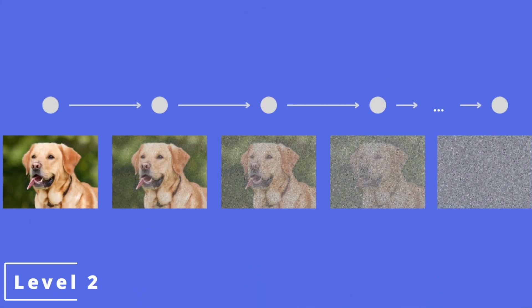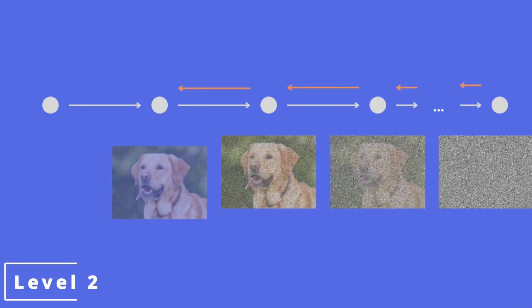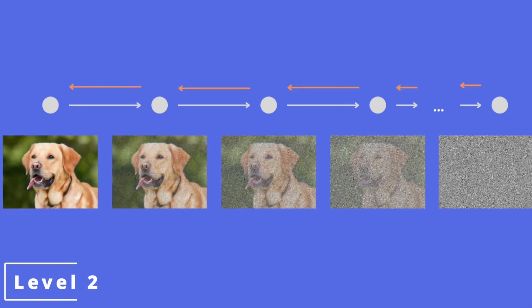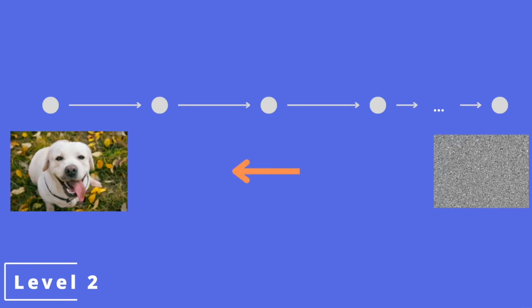Diffusion-based techniques start with a random picture and gradually transform it to resemble the target picture. This is achieved by adding noise to the image in a controlled manner while keeping it close to the target. It's similar to how heat spreads through a material — that is why they are called diffusion models.